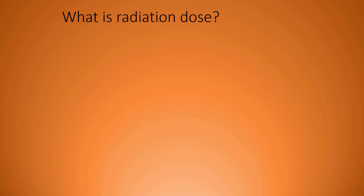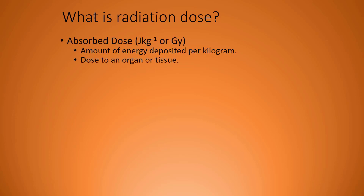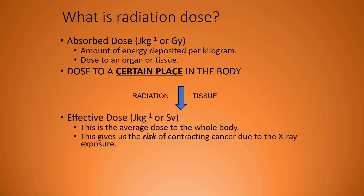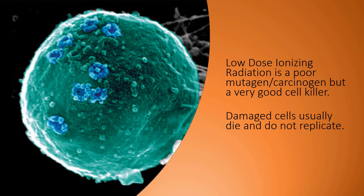What is a radiation dose? A radiation dose is the amount of energy deposited per kilogram of tissue or organ. Dose to a certain place in the body is known as effective dose — this is the average dose to the whole body that gives us the risk of contracting cancer due to the x-ray exposure. Overall dose is a whole body exposure. When we discuss low doses of ionizing radiation used in medical imaging, we find that it is a poor mutagen — it doesn't damage cells and have them mutate very often — but it is a very good cell killer.